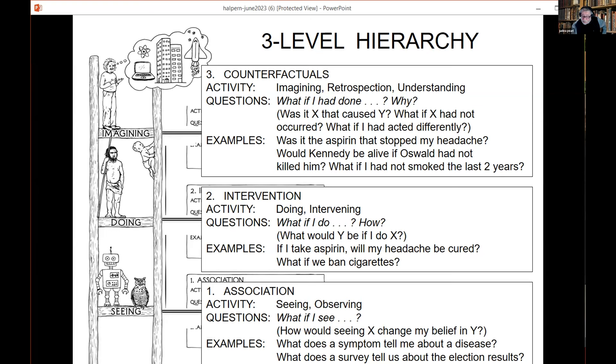Specifically, if you seek answers to questions of interventional type, what will happen if I do something, you cannot get it from level I, which is purely association, statistics, machine learning, and so forth.